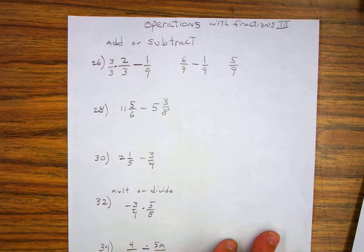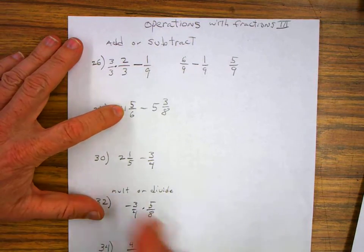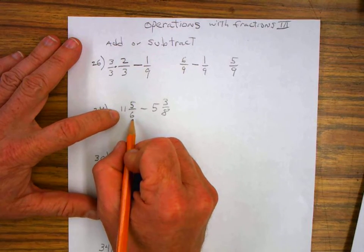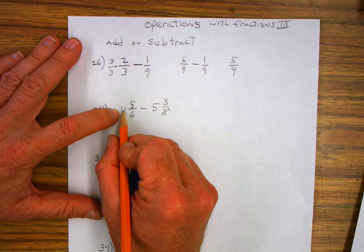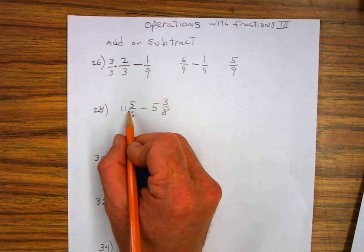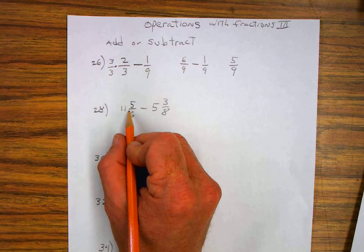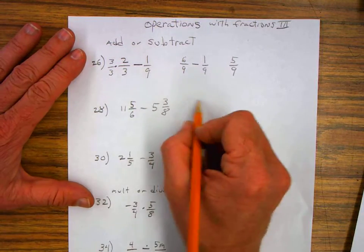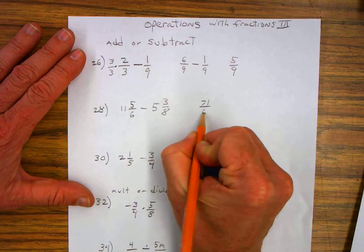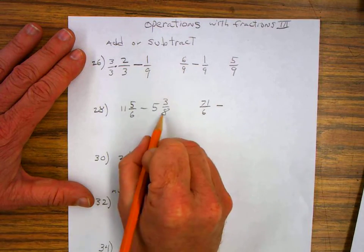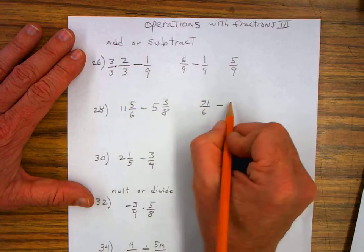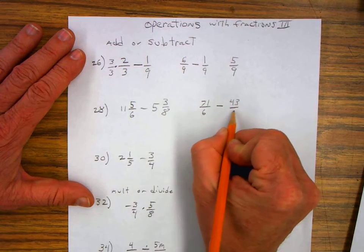In the second problem we got mixed numbers so I'm going to turn those mixed numbers into improper fractions. So six times eleven is sixty-six plus five is seventy-one over six minus five times eight is forty plus three is forty-three over eight.